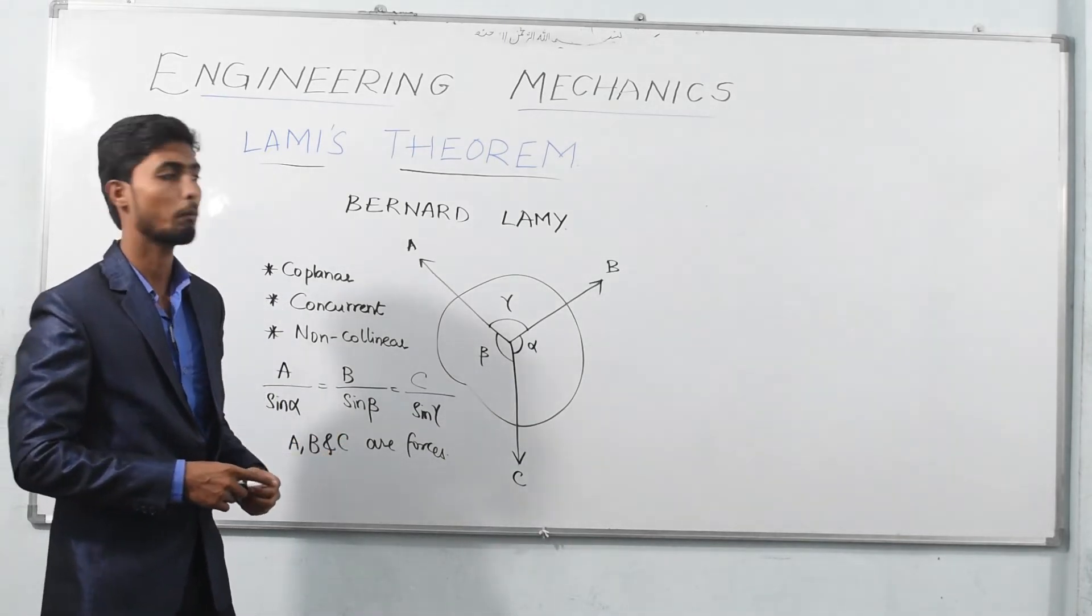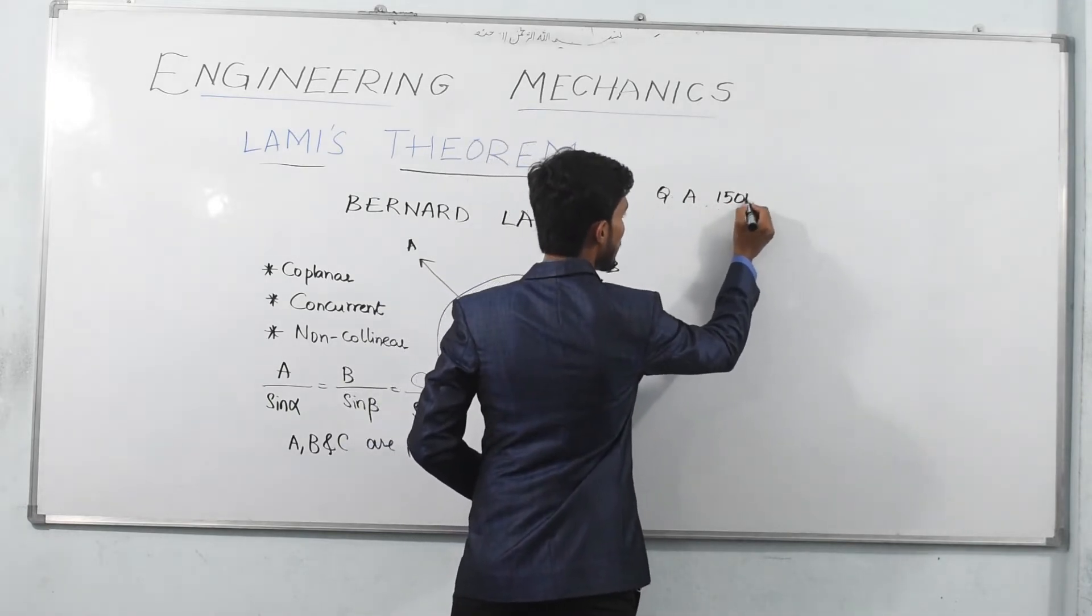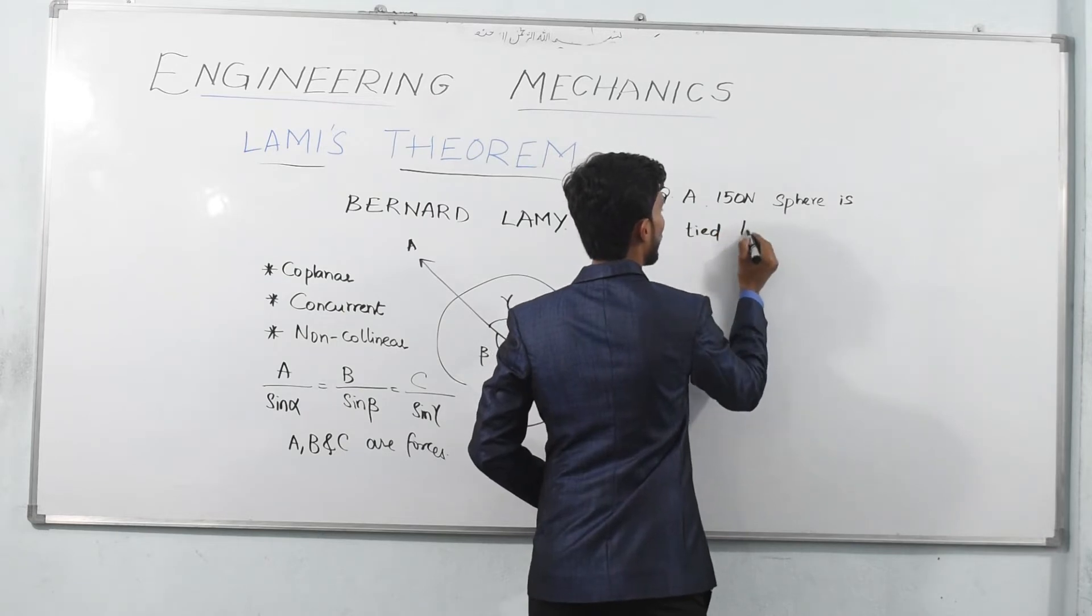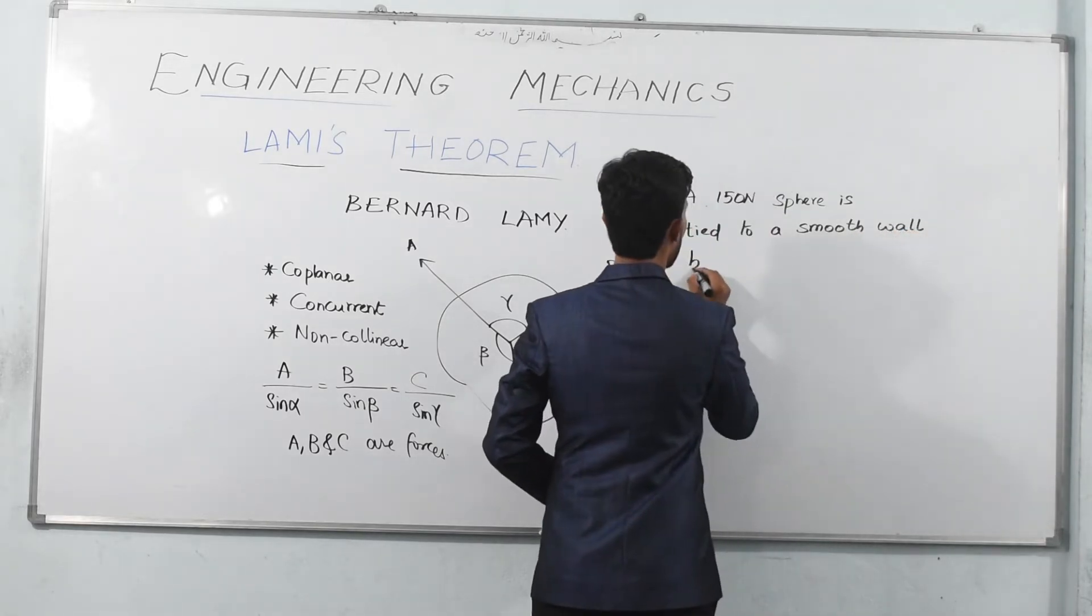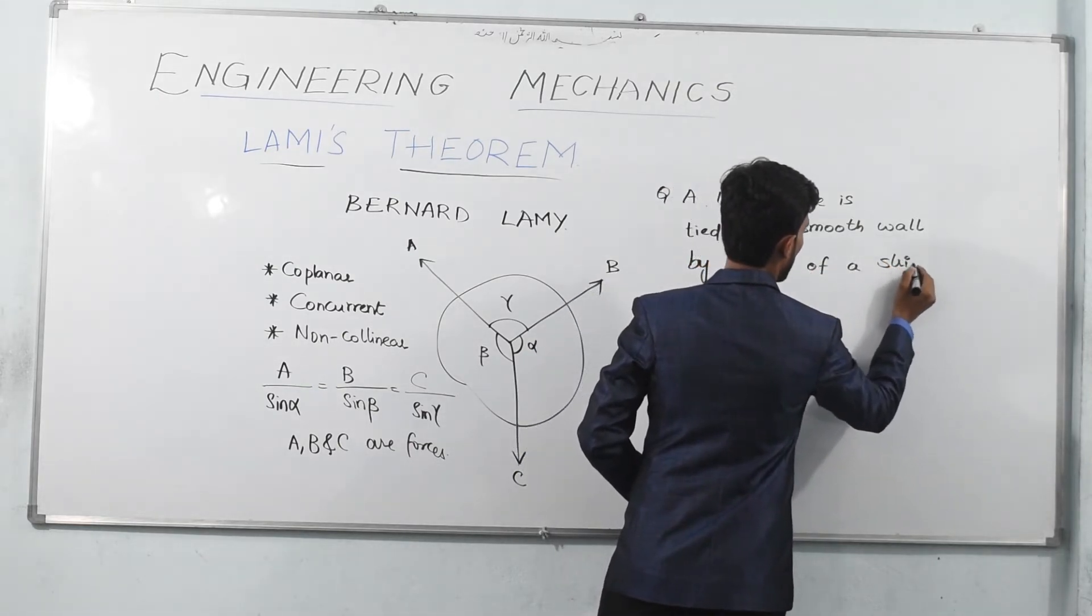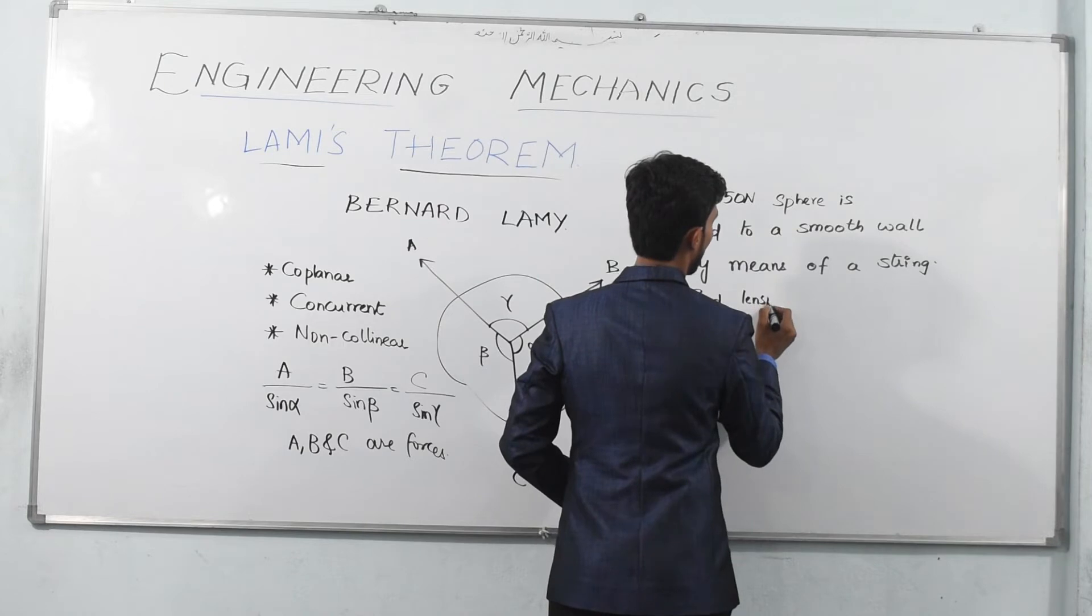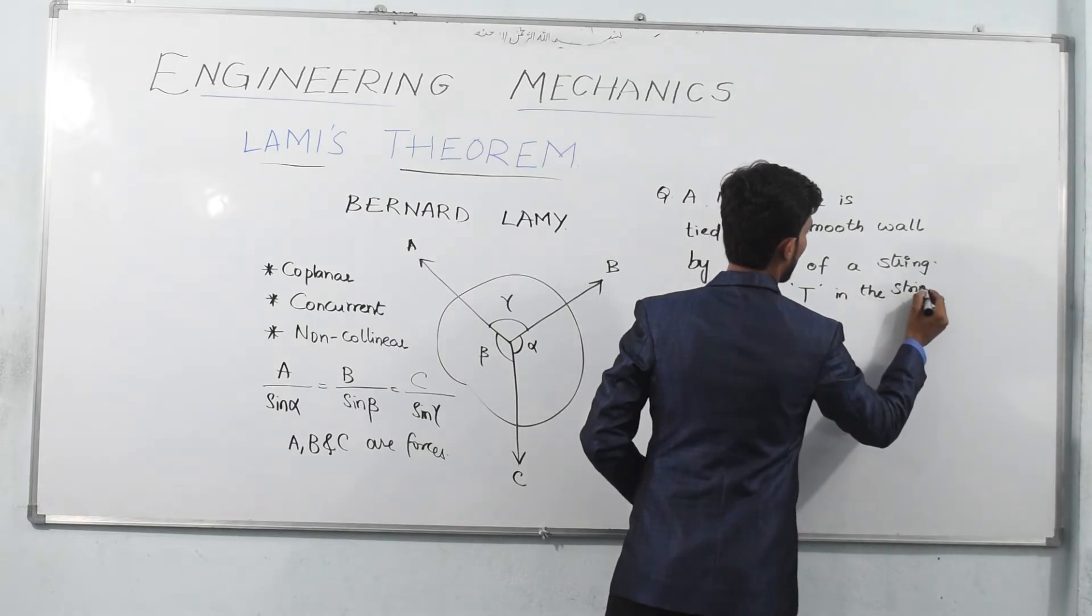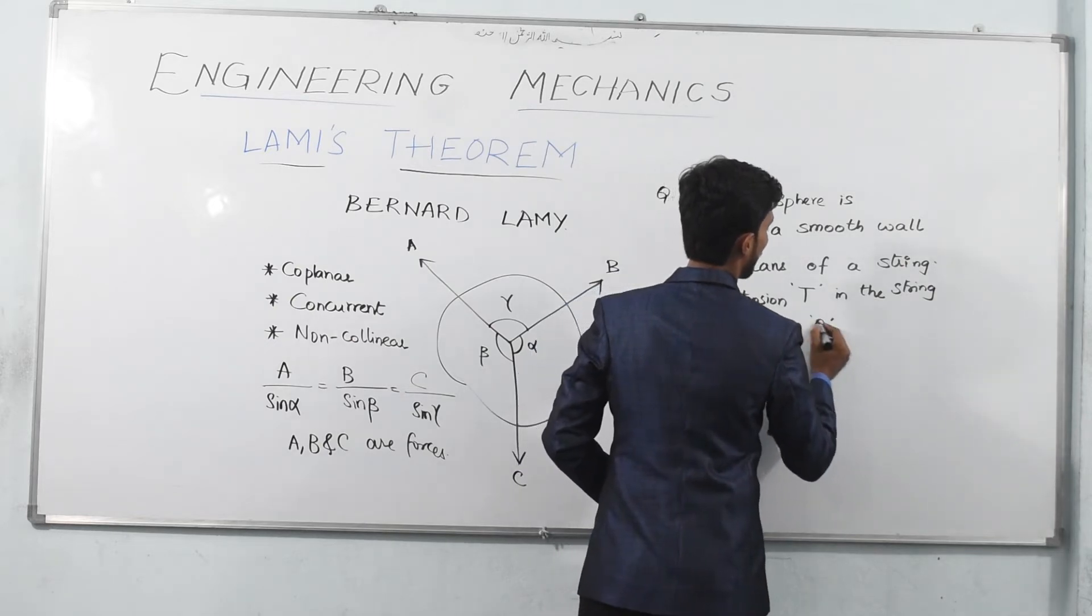So let us understand this concept by a typical problem. The question is: a 150 Newton sphere is tied to a smooth wall by means of a string. Find tension T in the string and reaction R from the wall.